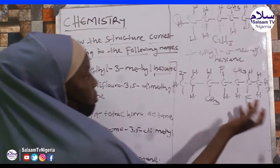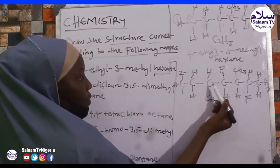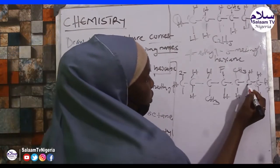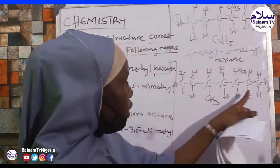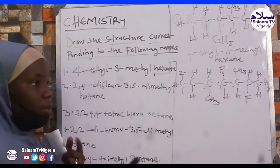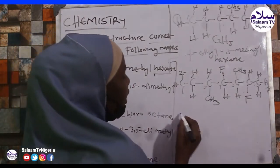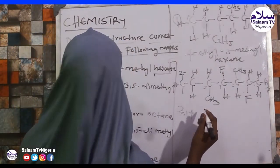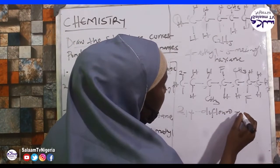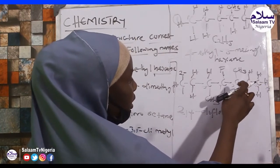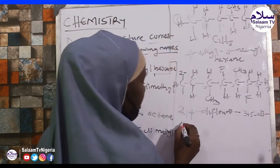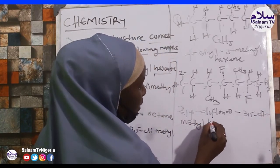So the parent chain is heptane: 1, 2, 3, 4, 5, 6, 7. On positions 2 and 4 we have fluorine. Naming in alphabetical order: 2,4-difluoro — then positions 3 and 5 — 3,5-dimethylheptane.